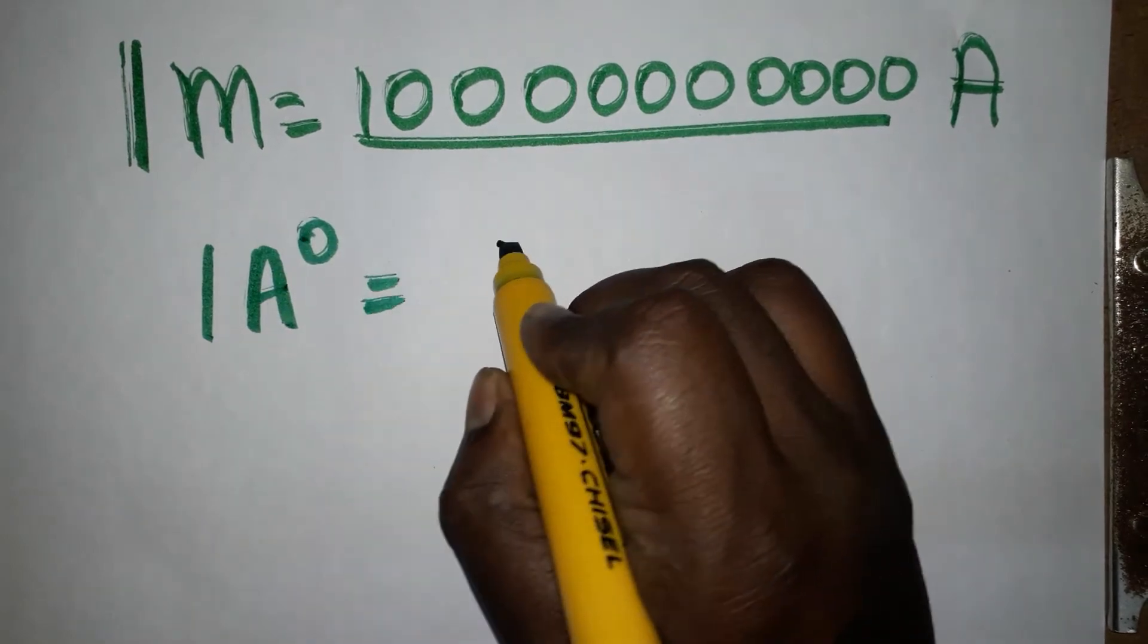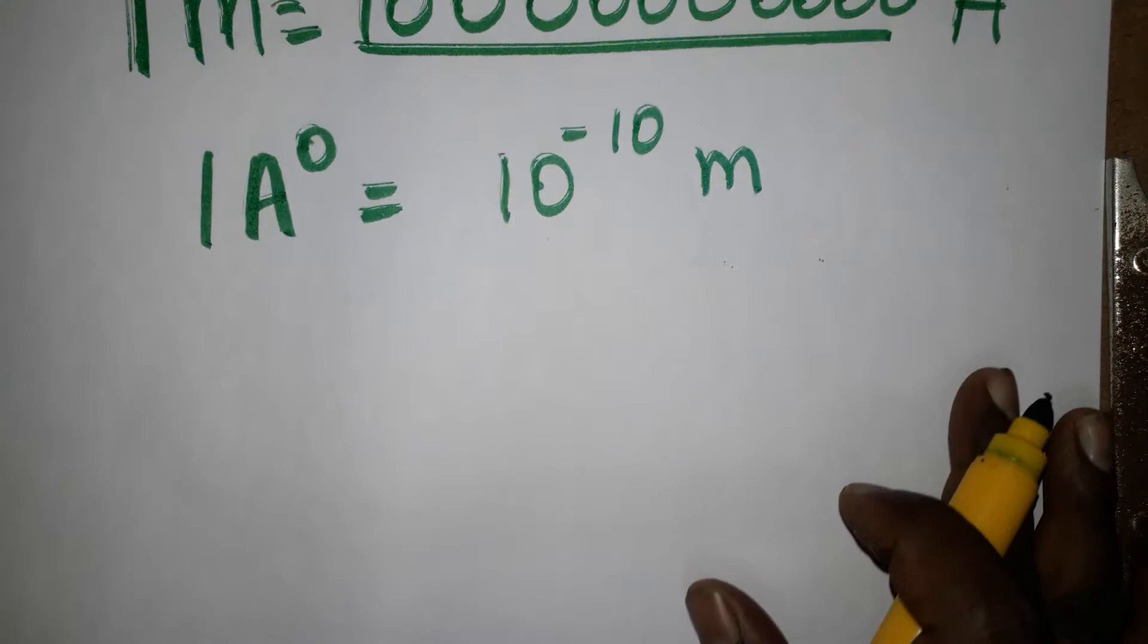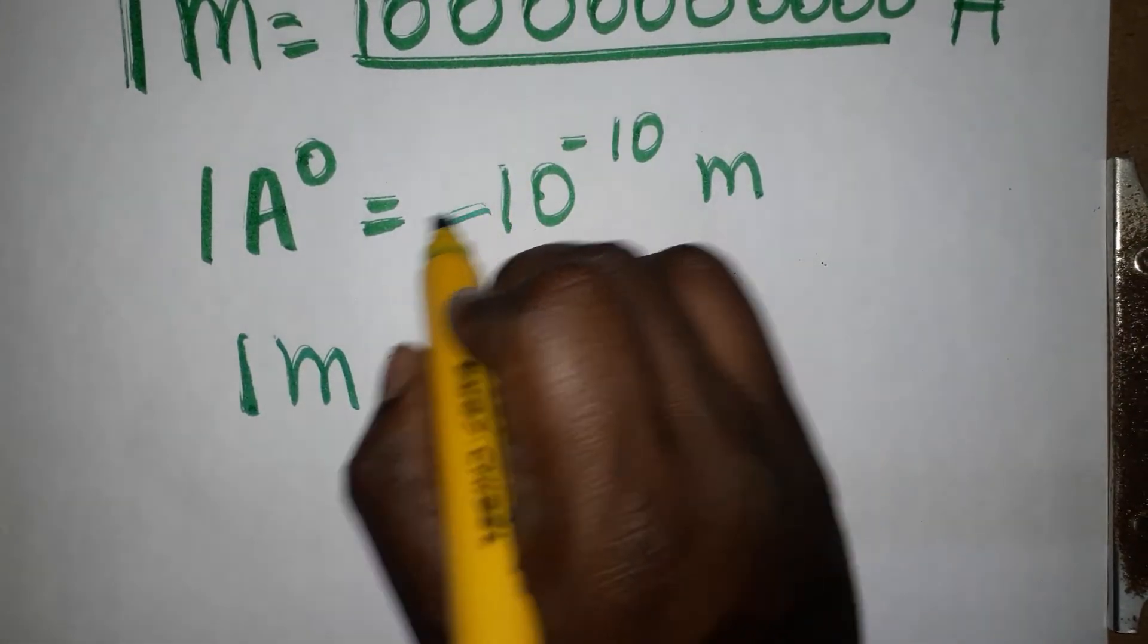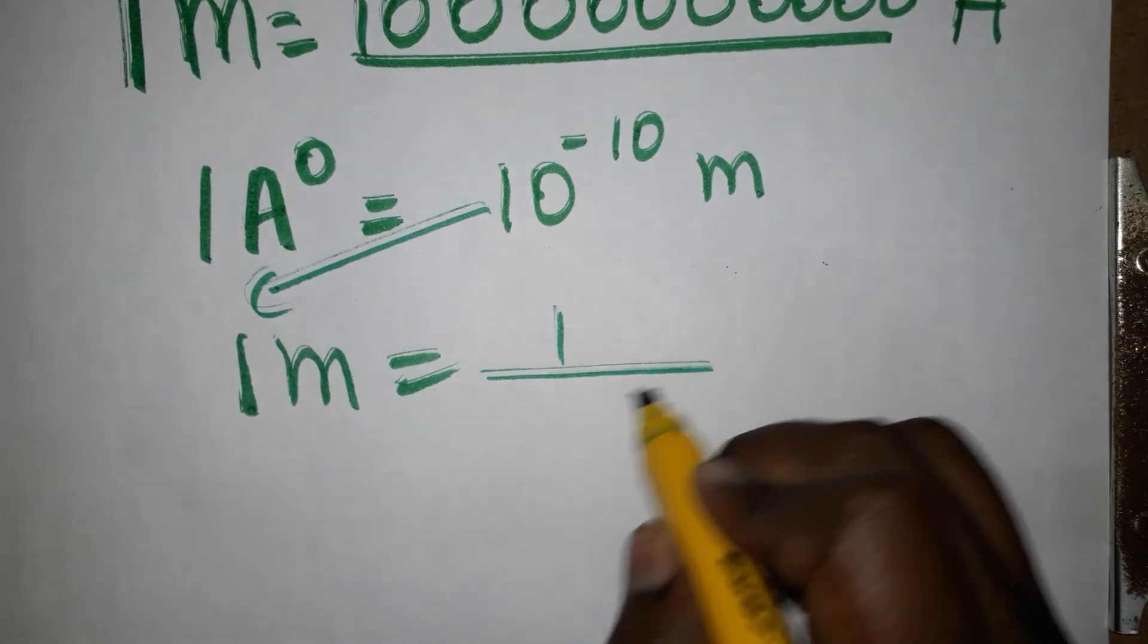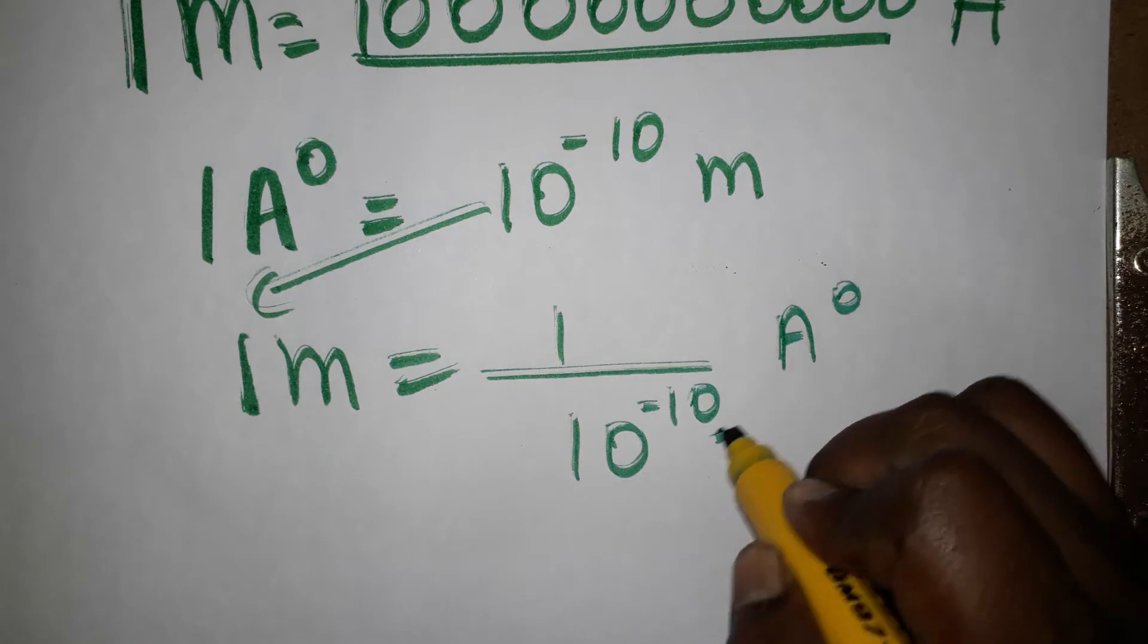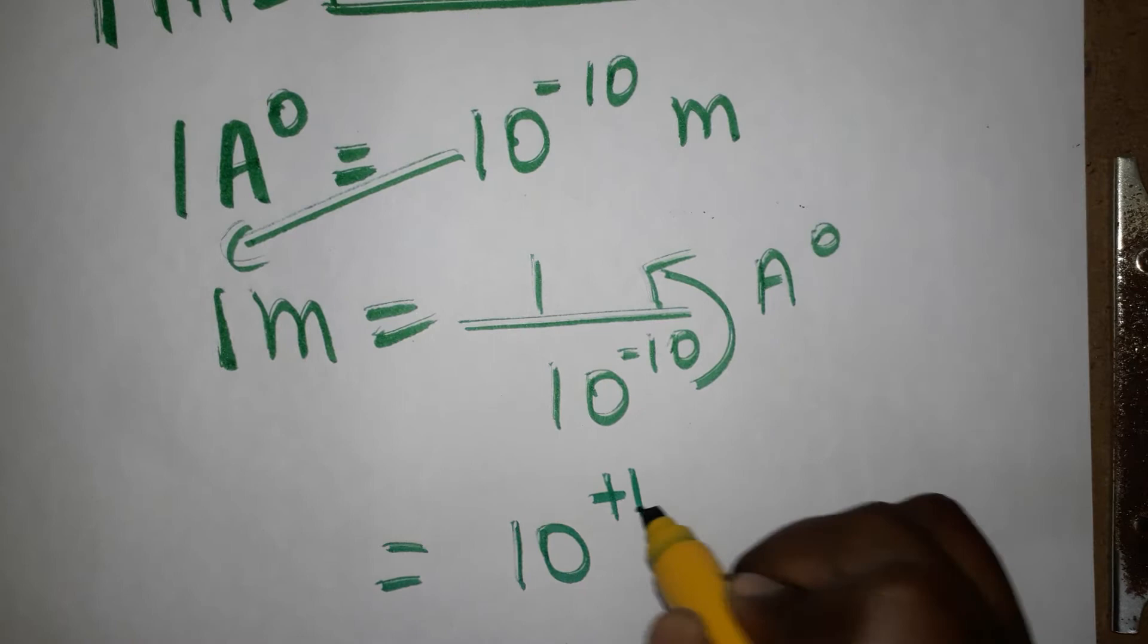One angstrom unit is equal to 10 power minus 10 meters. So the opposite way, one meter equals 1 divided by 10 power minus 10 angstrom units. When I bring this from the denominator to the numerator, 10 power minus 10 becomes 10 power plus 10.